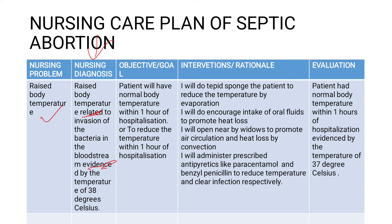In terms of our objective or goal, we can say patient will have normal body temperature within one or two hours of hospitalization, or reduce the temperature within one hour of hospitalization. In terms of the interventions, you can do tepid sponging. This will help reduce the temperature by evaporation.